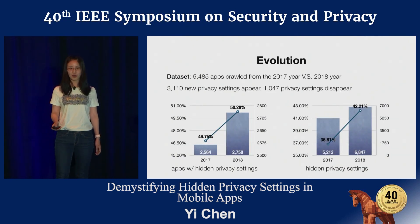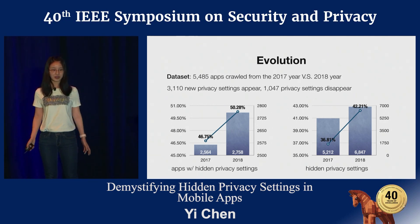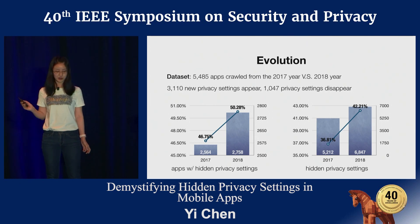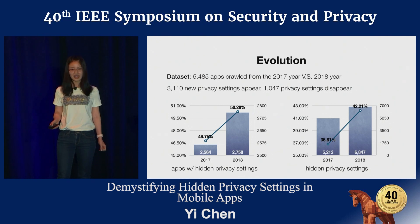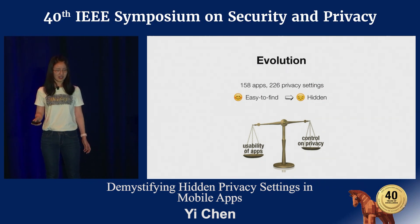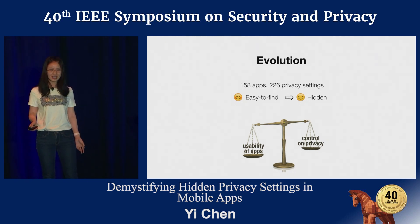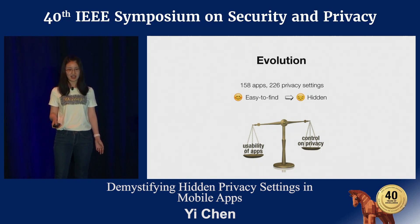We also studied the hidden privacy setting problem over time. For the 7,000 apps, we crawled their latest versions in 2018 and got about 5,000 matches. After comparing versions, we found some new privacy settings appeared while some original ones disappeared. The sad news is the hidden privacy setting problem became more serious: not only did the number of apps with hidden privacy settings increase, but also the number and percentage of hidden privacy settings themselves. Some apps even changed from easy-to-find to hidden in a new version, possibly because adding more functionalities made it hard to balance app usability and privacy control.